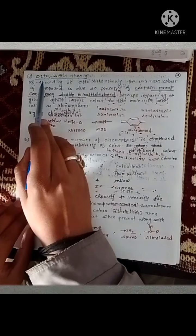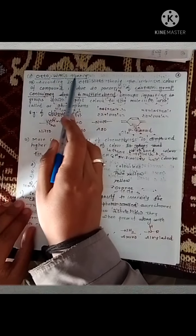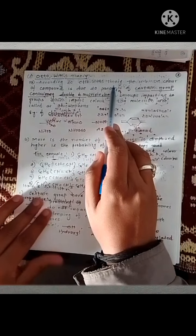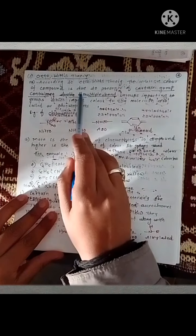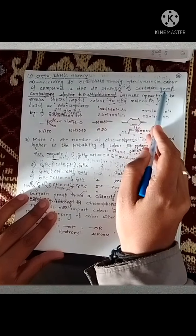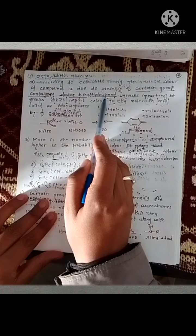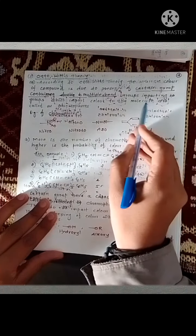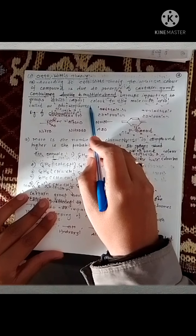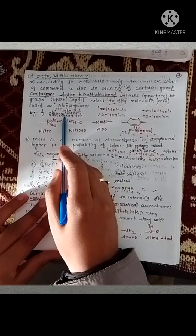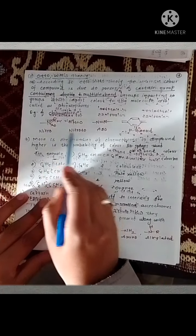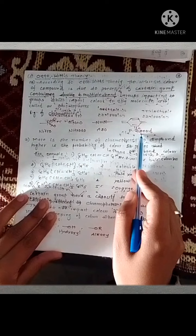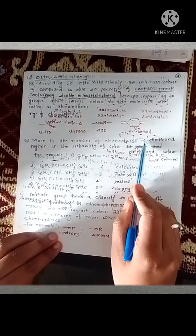What is Witt's theory, or classical theory? According to Witt's theory, the intrinsic color of a compound is due to the presence of certain groups containing multiple bonds. Groups imparting color are generally known as chromophores. Some examples of chromophore groups are the nitro group, nitroso group, azo group, and carbonyl group.